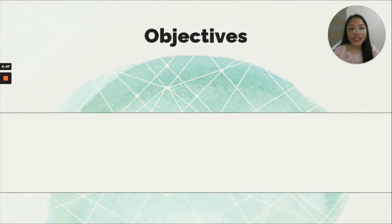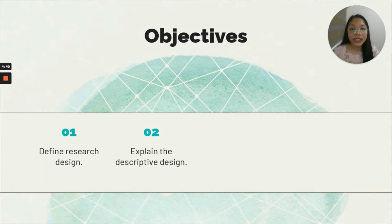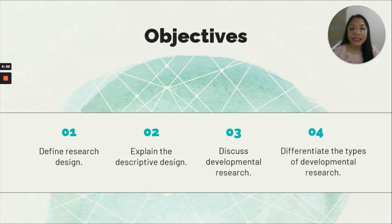The following are the objectives of this video discussion. First, define what a research design is. Second, explain a descriptive design in quantitative research. Third, discuss developmental research. And lastly, differentiate the types of developmental research.